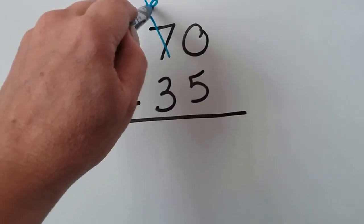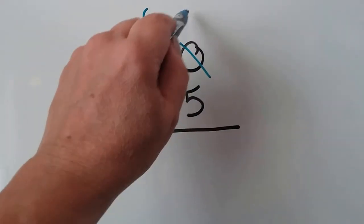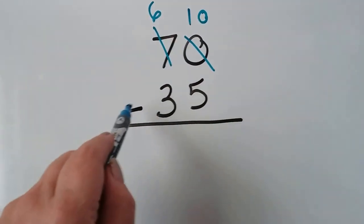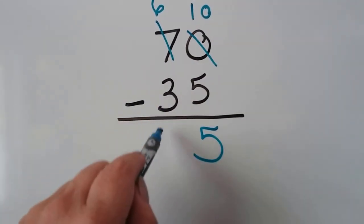This 7 becomes a 6. We give it to the ones place. Instead of a 0 for ones, we now have 10 ones. 10 minus 5 is 5. And 6 minus 3 is 3.